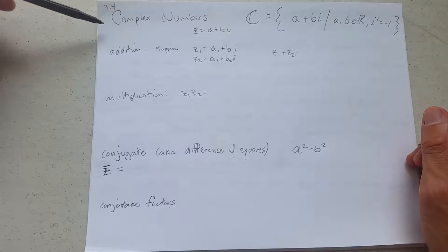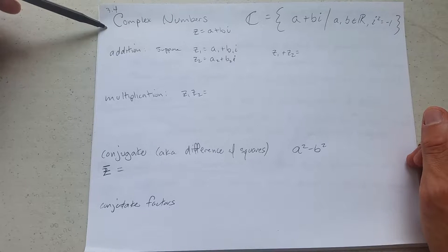Now that we know about i, what are complex numbers? Complex numbers definitely include the number i.